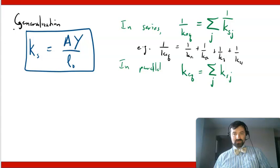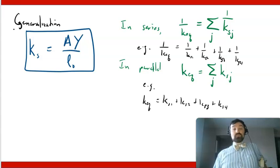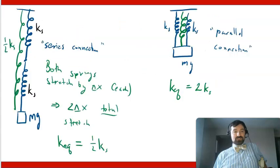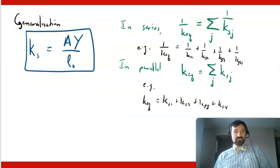k s one, k s two, k s three, k s four. And down here in parallel, k equivalent is equal to k s one plus k s two plus k s three plus k s four. Now notice, when you put them in series, the length of the total gets longer, but in parallel, the effective area gets bigger. So this also matches with this equation.